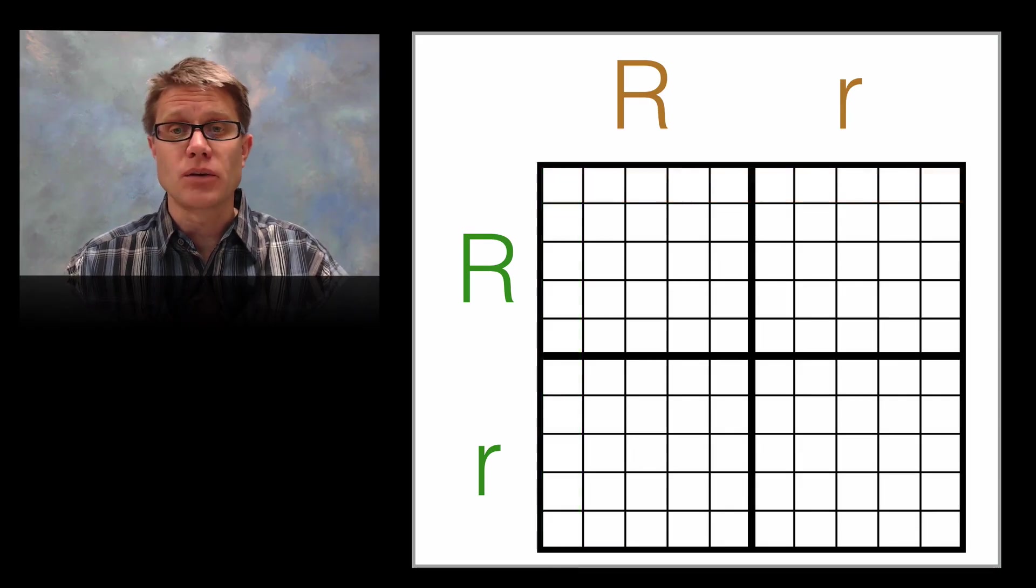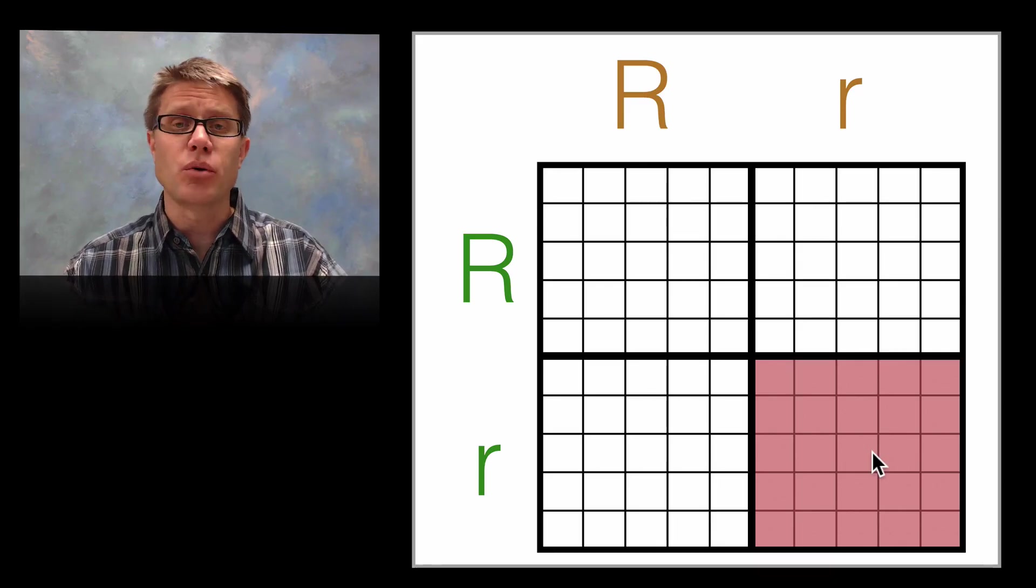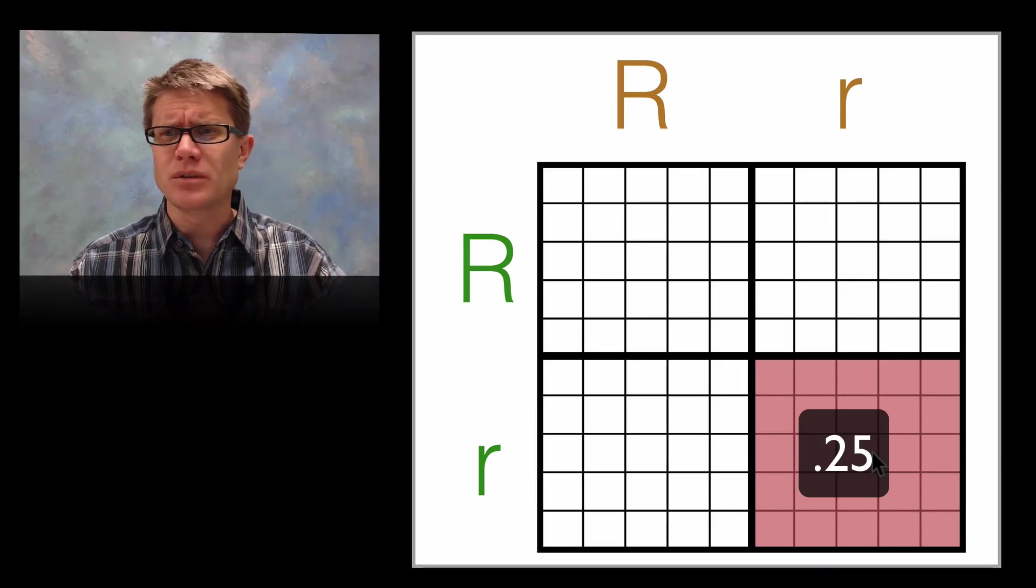And so what I can work out is I can work out what is the probability in this population that I'm going to get somebody who has red hair. Well how do you figure that out? It's going to be all of those in this square right here. In other words it's going to be a 5 by 5 or a 25 out of 100. 25 percent or 0.25 is going to be the amount of people who have red hair. But you might say that was just like the Punnett square we had a second ago.